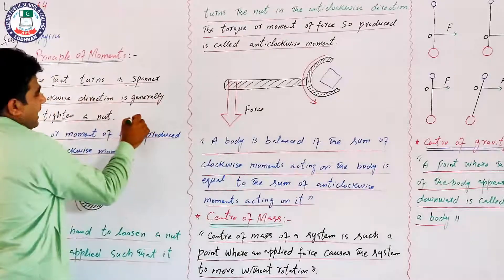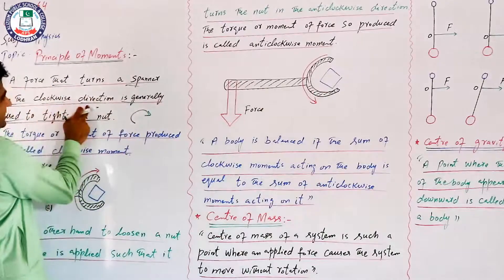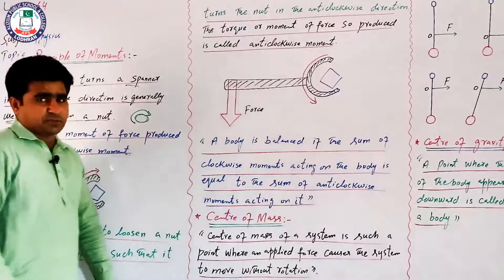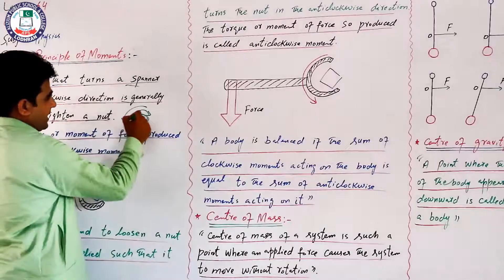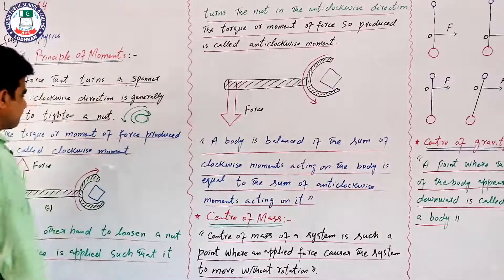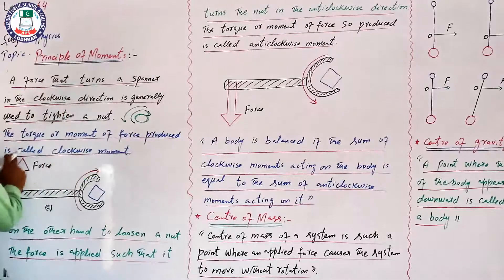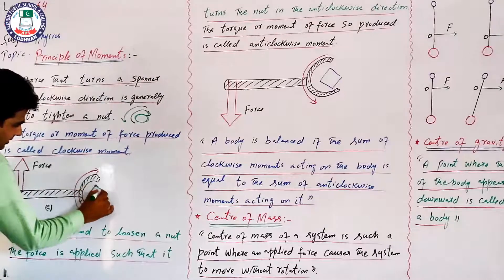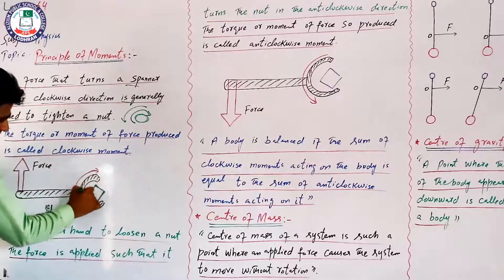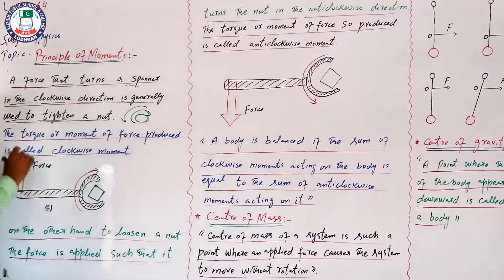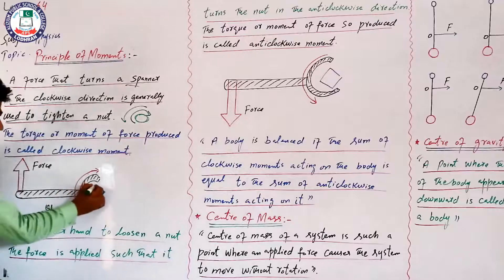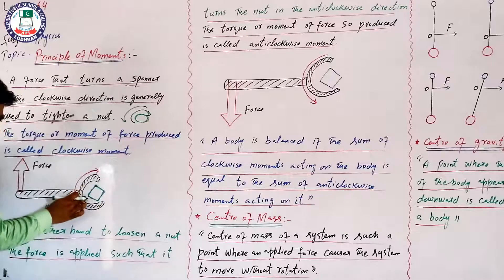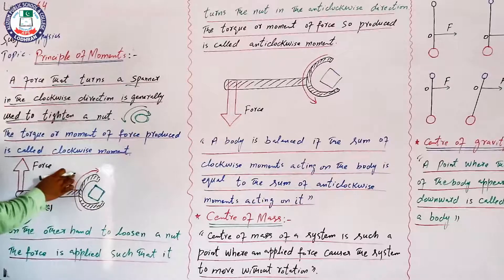Nut को tight करने के लिए spinner को clockwise move करवाएंगे, anti-clockwise नहीं। अगर आप spinner को clockwise direction में move करवाते हैं तो nut tight होगा। अगर इसको anti-clockwise rotate करवाएंगे तो nut lose होगा। The torque or moment of force so produced is called clockwise moment। Nut के across spinner लगाया हुआ है, clockwise direction में force लगाएंगे तो nut tight होगा।